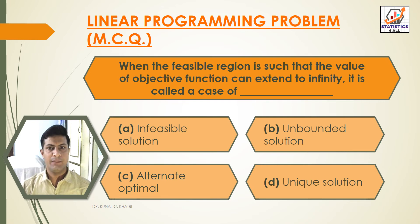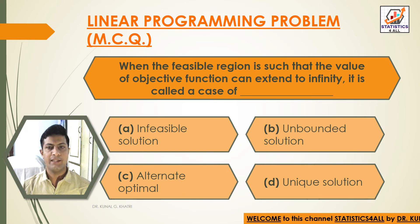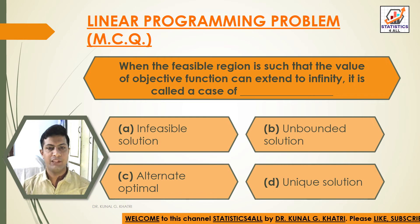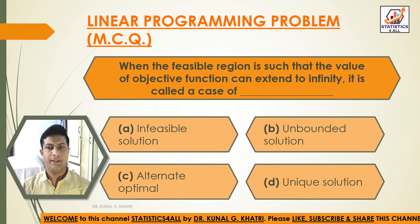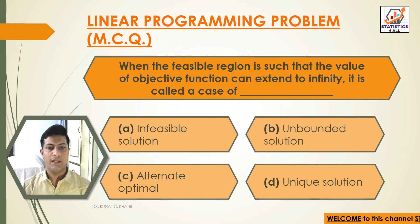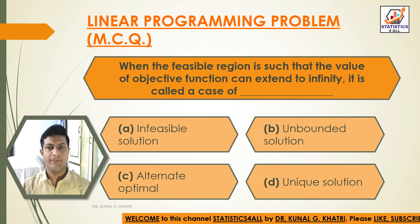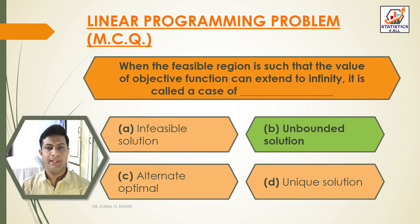Question 12: When the feasible solution is such that the value of the objective function can extend to infinity, it is called a case of dash. Option A: Infeasible solution. Option B: Unbounded solution. Option C: Unknown solution. Option D: Unique solution. Answer: Option B — When the feasible region is such that the value of objective function can extend to infinity, it is called a case of unbounded solution.